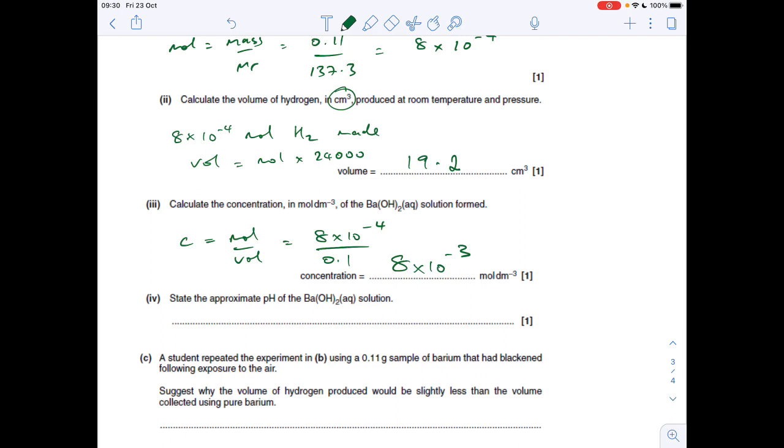Next part: the approximate pH of the barium hydroxide solution. Well, Group 2 hydroxides are alkaline, so the mark scheme would allow anything in the alkaline range, 8 to 14. Technically, the hydroxides get more alkaline as you go down the group, so I'd probably go closer to 14, maybe about 12. Basically, anything in that region would be fine.